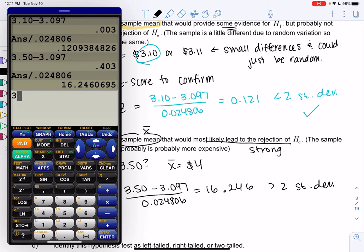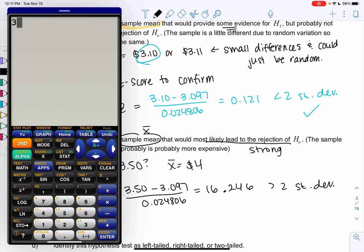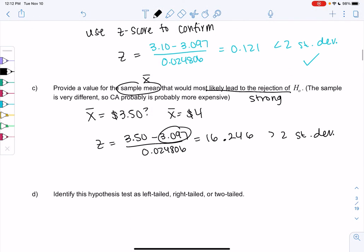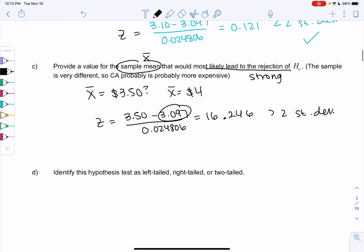So maybe we didn't have to go this far. Maybe even $3.20 was far enough. So we'll do 320 minus 310, or sorry, 320 minus 3.097, divided by 024806. Yeah, and even $3.20 was far enough away, because we have a z-score of 4. So figuring out how far is tricky, and we'll get better at that. But just something far away would be strong evidence.